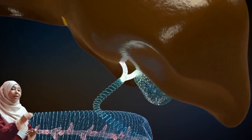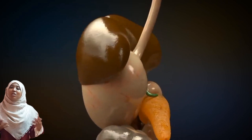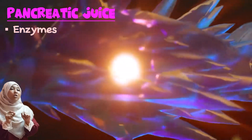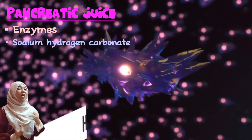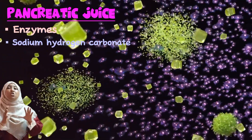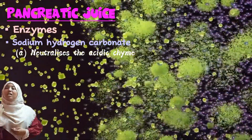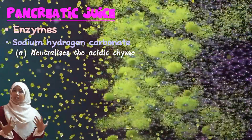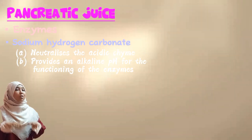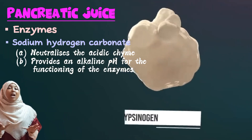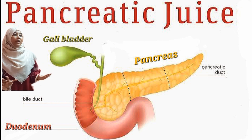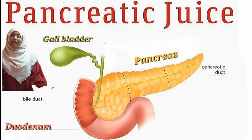The pancreas releases pancreatic juice, which travels through the pancreatic duct into the duodenum. The pancreatic juice contains a variety of enzymes and a chemical compound called sodium hydrogen carbonate. Sodium hydrogen carbonate has two functions: first, it neutralizes the acidic chyme coming from the stomach; and second, it provides an alkaline pH for the optimal functioning of the enzymes in the duodenum, which prefer an alkaline pH.